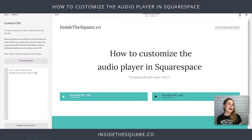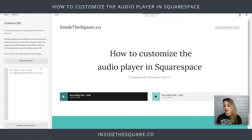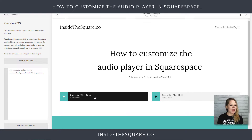We can also isolate just the back of the very first part where we have our play button. We can do that by adding a period and the word "action" to the very beginning, and now just the background of that first part is going to have that color change. You'll notice the light version goes back to its light gray and the dark version goes back to that darker gray color.